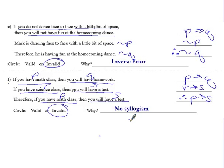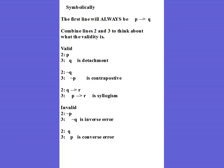All right. I know that seems like a lot. But as a little extra bonus here. All I'm going to do is just kind of sum all that up in one little page here. So hopefully this kind of all shows up on the screen. We'll see. So what does this look like symbolically? Remember, the first line will always be P Q. Then what you do is you combine lines two and three to think about the validity.